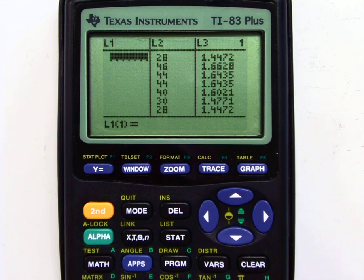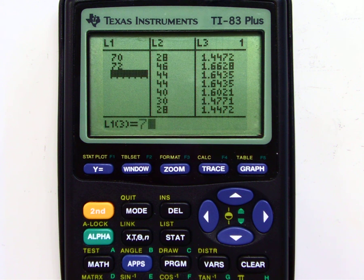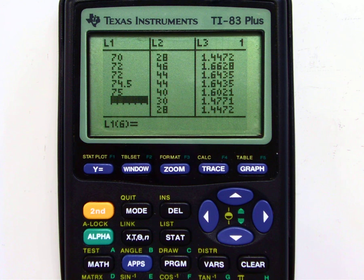Now I'm going to enter in the 12 heights in any order I want. I just put them in the order that's given to me just for convenience. Now after each time I enter in a number, I just hit enter in the lower right.